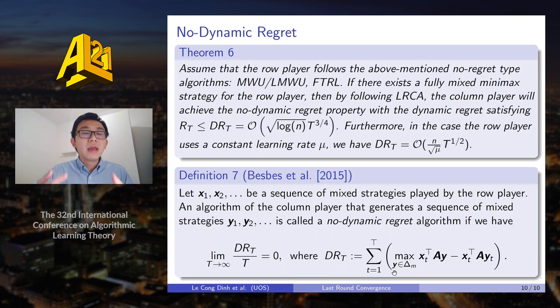And finally, we provide the regret analysis for LRCA. So given that the row player follows the above-mentioned no regret type algorithms, such as multiplicative weight updates, linear multiplicative weight updates, or FTRL, if the column player follows LRCA, then it can achieve the dynamic regret of order T to the power of 3 over 4, which is sublinear.